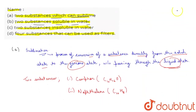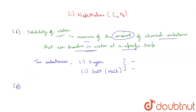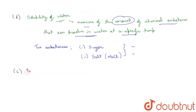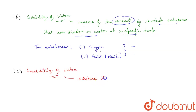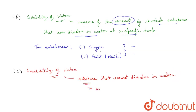Now moving to the third one, that is two substances insoluble in water. Insolubility of water is a measure of the amount of chemical substance that cannot dissolve in water, which means that substance is incapable of being dissolved in water.